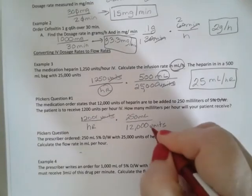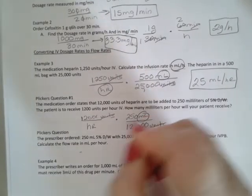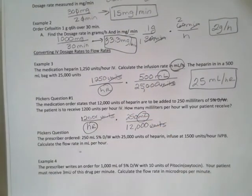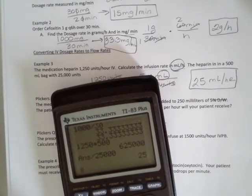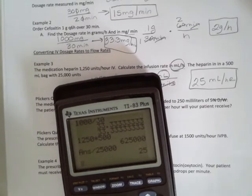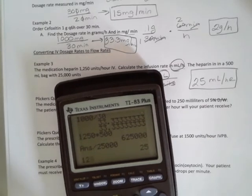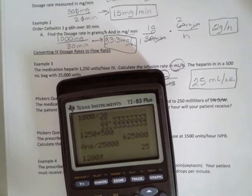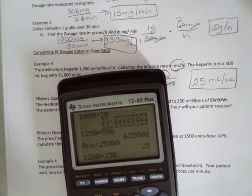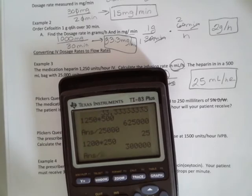So our units cancel. We have mLs per hour. So again, when I run that through my calculator, I have 1,200 times 250 divided by 12,000. And I get 25 mLs per hour.